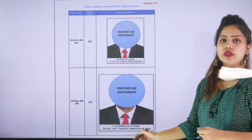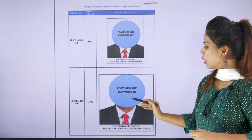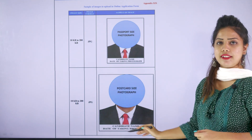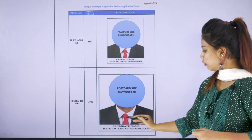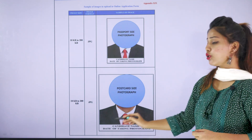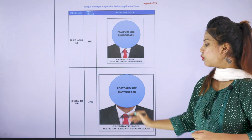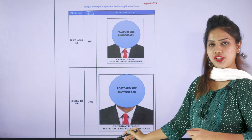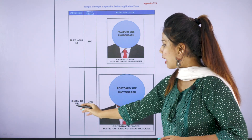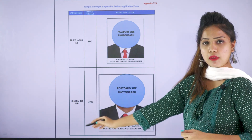Next is the postcard size photograph, for which the particulars are the same. Below it, mention your candidate's name and the date of taking the photograph. The image size is 10 KB to 200 KB.